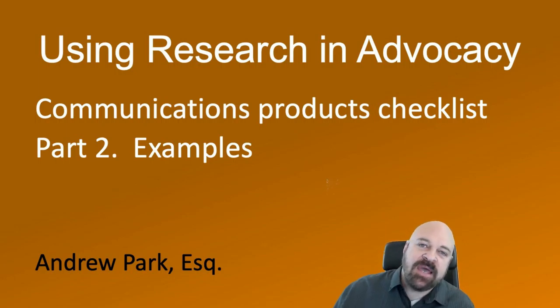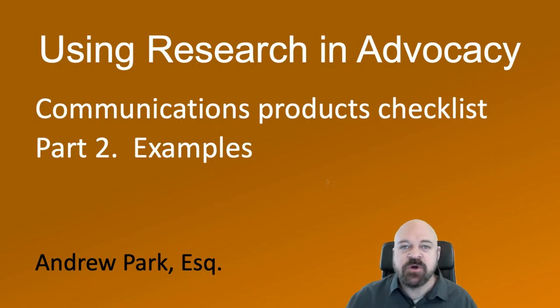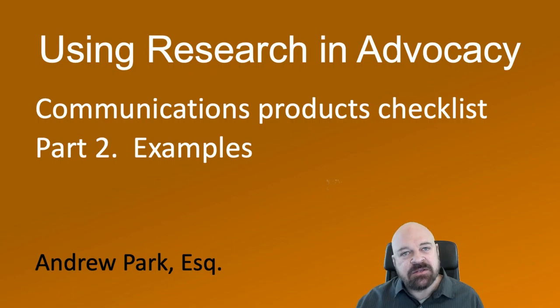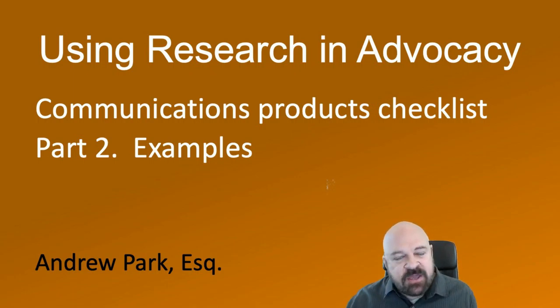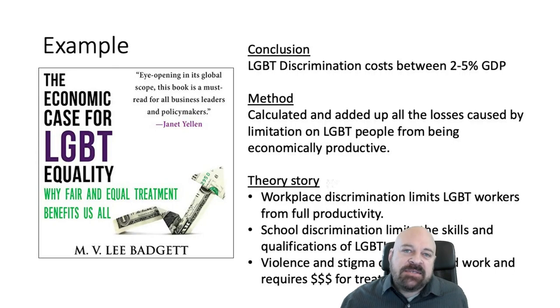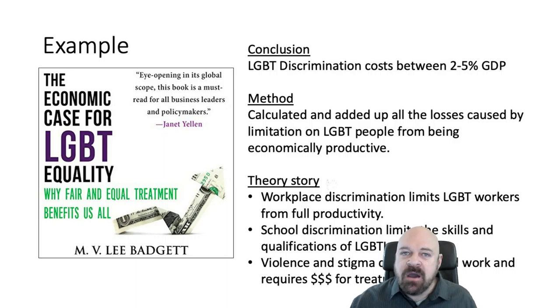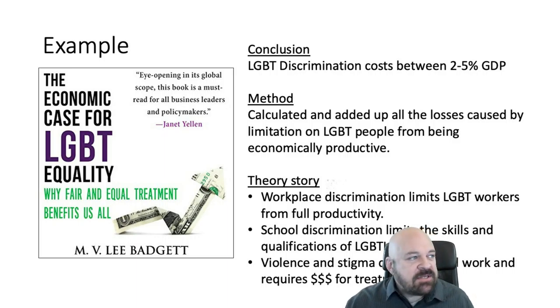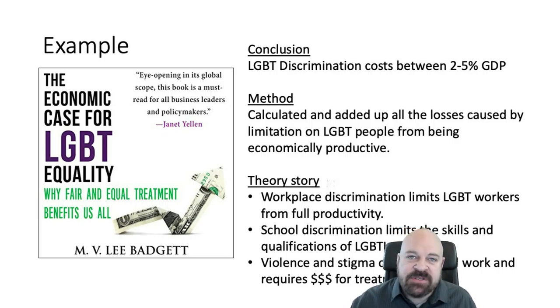I wanted to show an example of a research project and talk about these seven things that you could have. My example is the book written by economist Lee Badgett entitled The Economic Case for LGBT Equality.